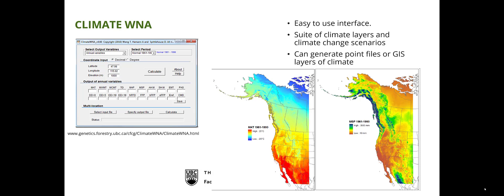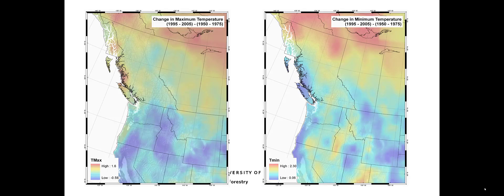These can produce layers that we can then put into models. Our ability to run these models over the landscape has really improved. We all understand that climate is changing, and these models give us spatial fine-scale understandings of what's actually happening.